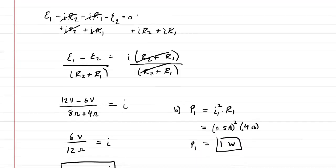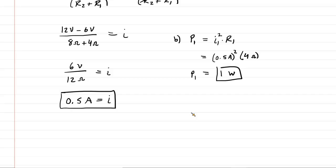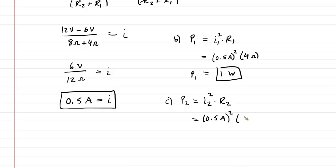Part C asks for the power through resistor 2. Using the same equation, P2 = I² × R2. The current is the same through both resistors, so we use 0.5 amps squared, multiplied by R2 which is 8 ohms. This gives us a power of 2 watts, which is the correct answer to part C.